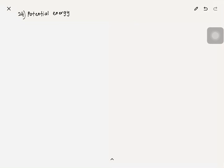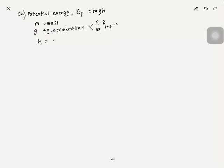Number 24: Potential energy Ep = mgh, where m is mass, g is gravitational acceleration (9.8 or 10 m·s⁻²), and h is height. The unit for energy is joule.